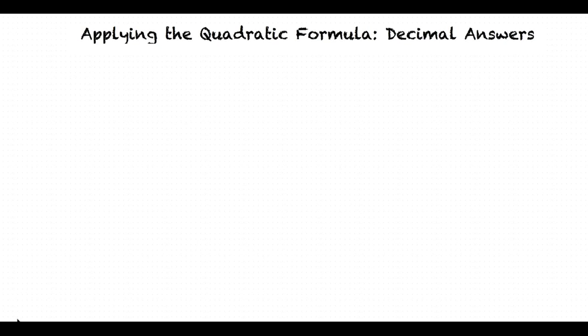Here's an example video for the topic applying the quadratic formula with decimal answers. For this video, we will look at the example 2x² - 3x - 7 = 0.